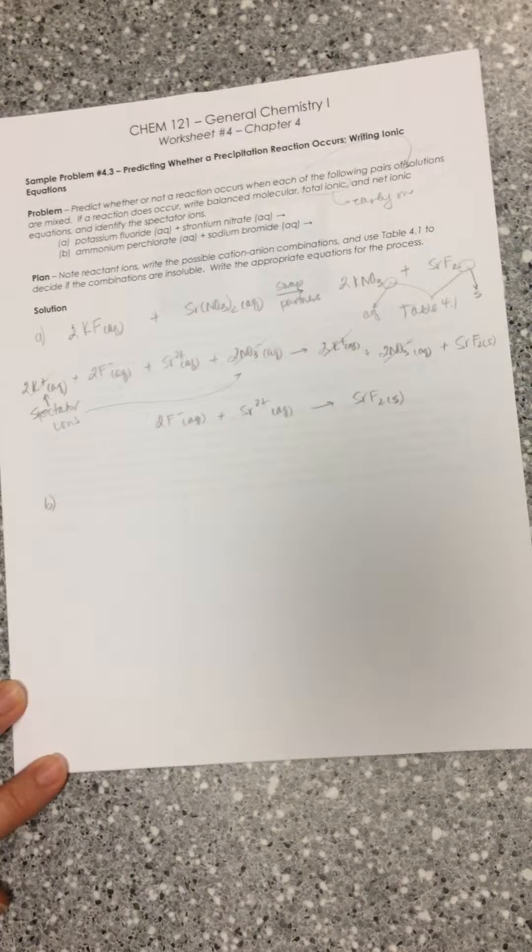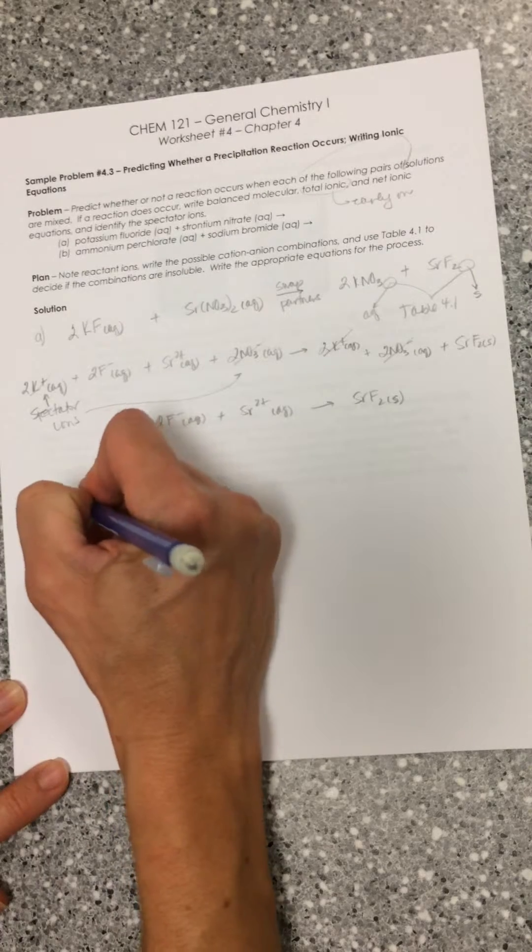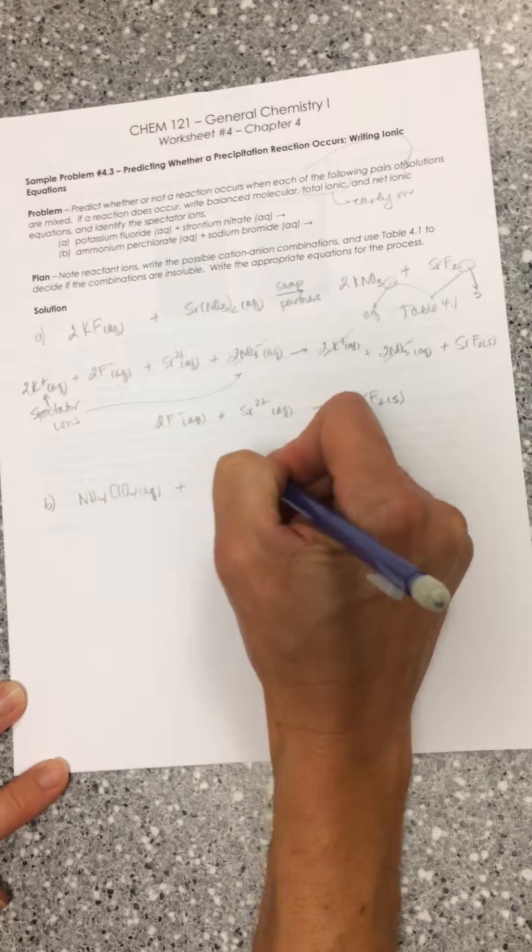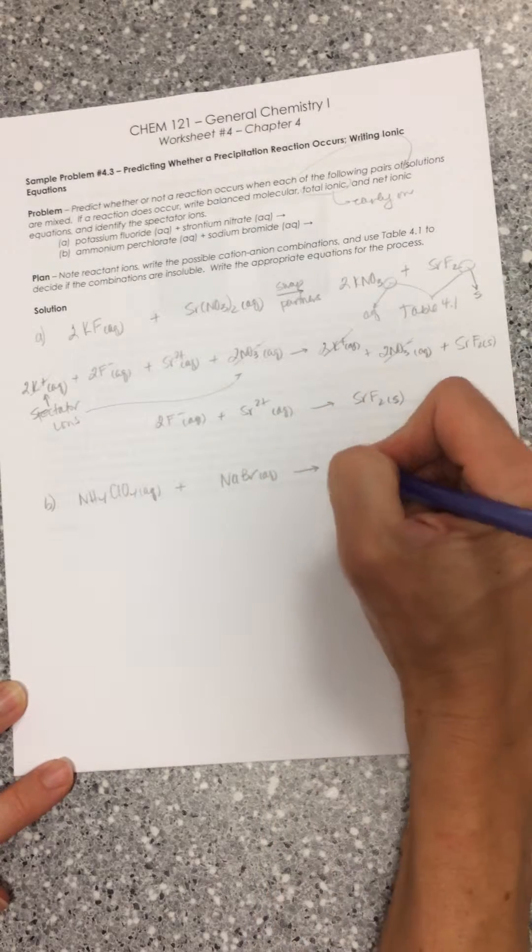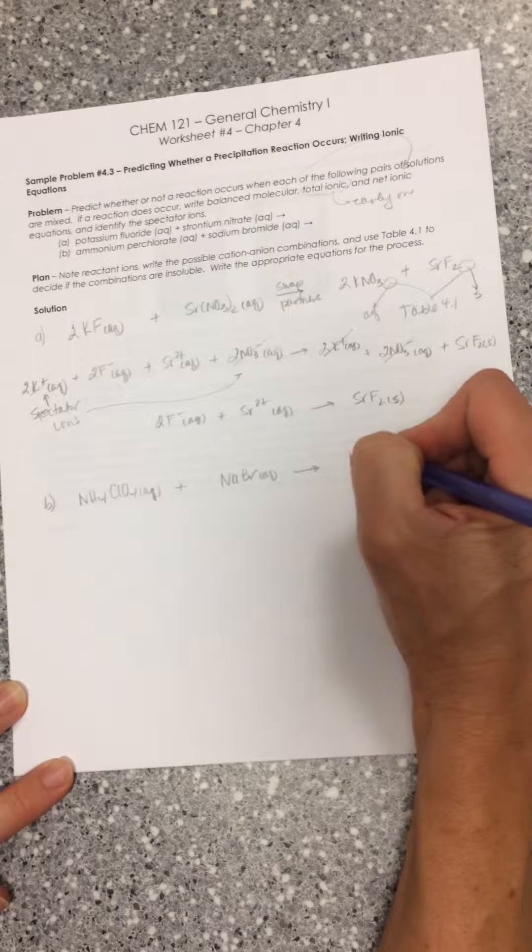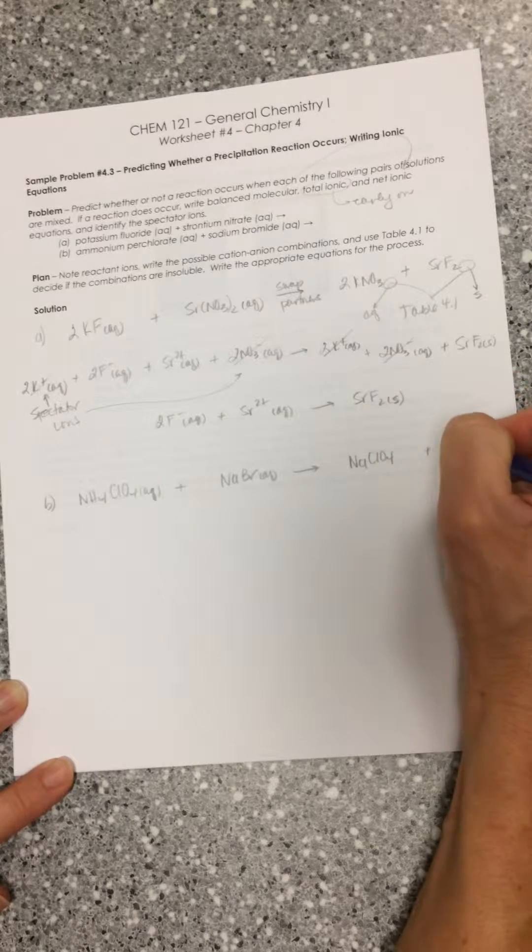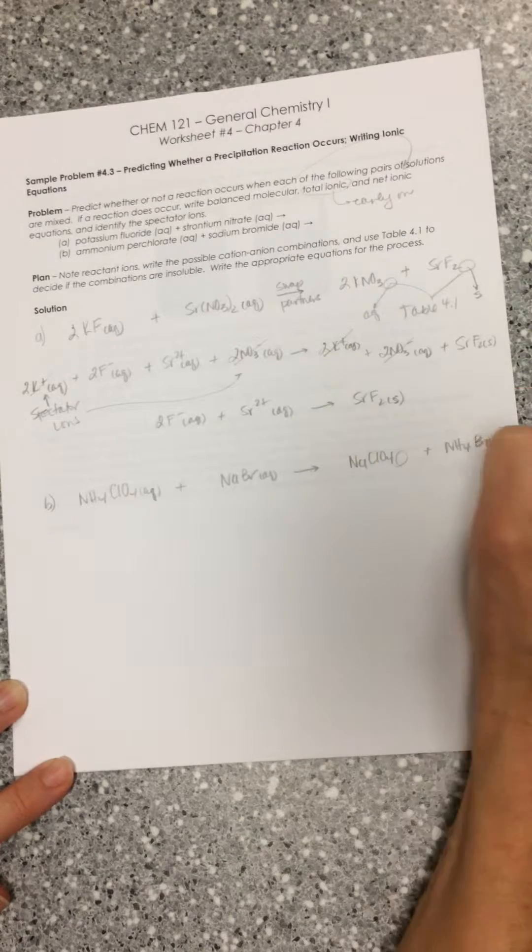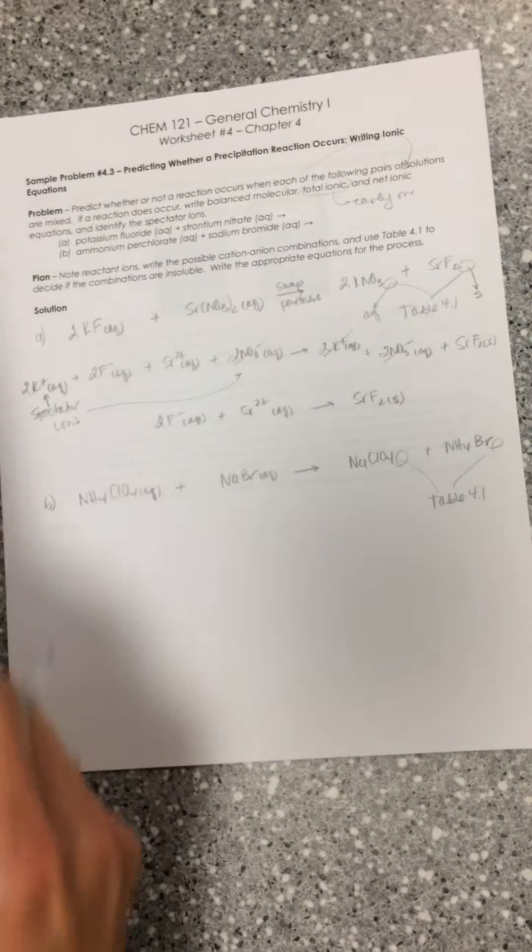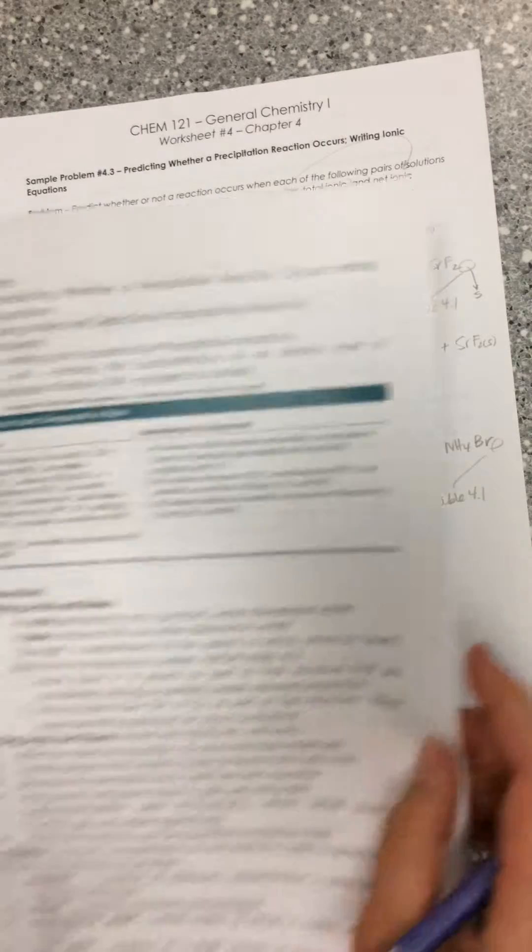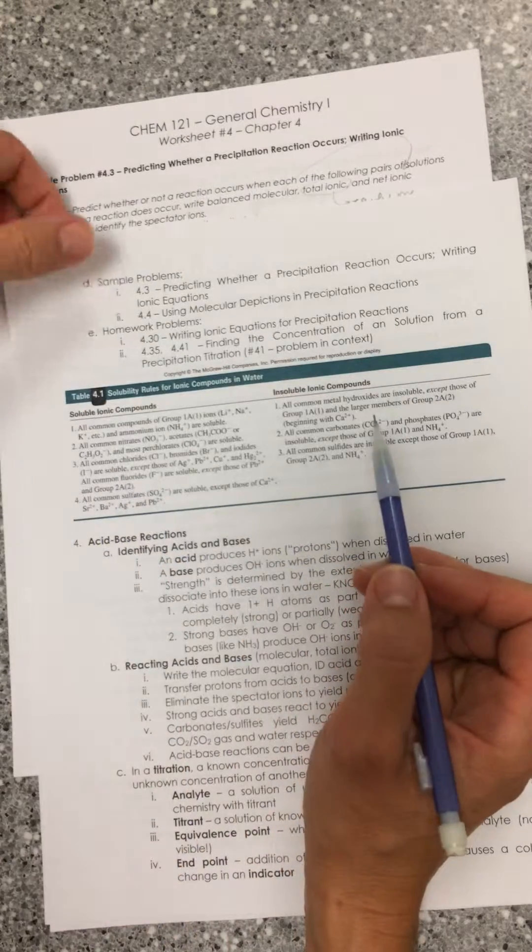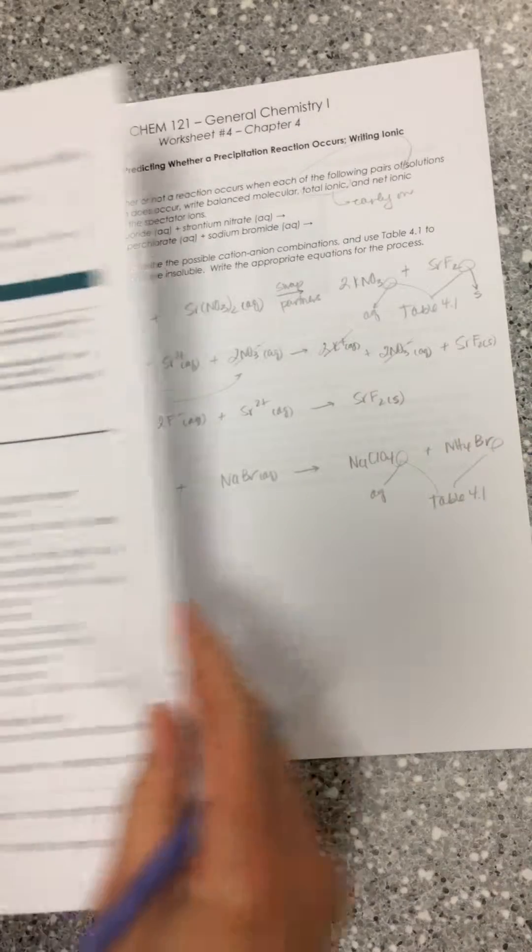Let's work through our second problem. Ammonium perchlorate, NH4ClO4 aqueous, plus sodium bromide. Swap partners - we get sodium perchlorate and ammonium bromide. We need to use Table 4.1 to see what these are. All common compounds of sodium are soluble. Perchlorates are soluble, so this is definitely aqueous. Ammonium salts are soluble, so that's soluble too.